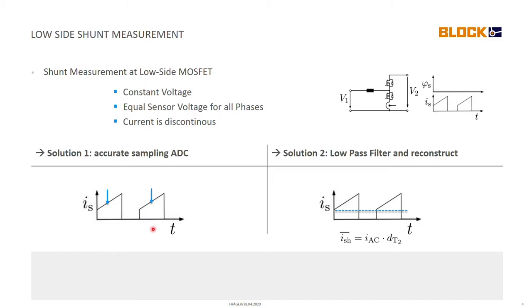What does low side shunt measurement mean? It means we just place the shunt directly at the bottom MOSFET of the half-bridge switching cell which means it's also at the same voltage as the DC minus or the negative DC bus.